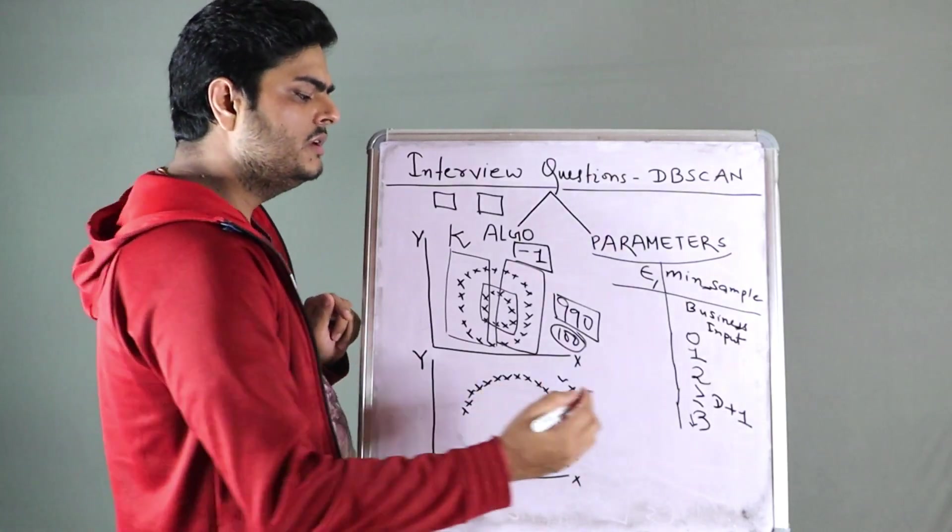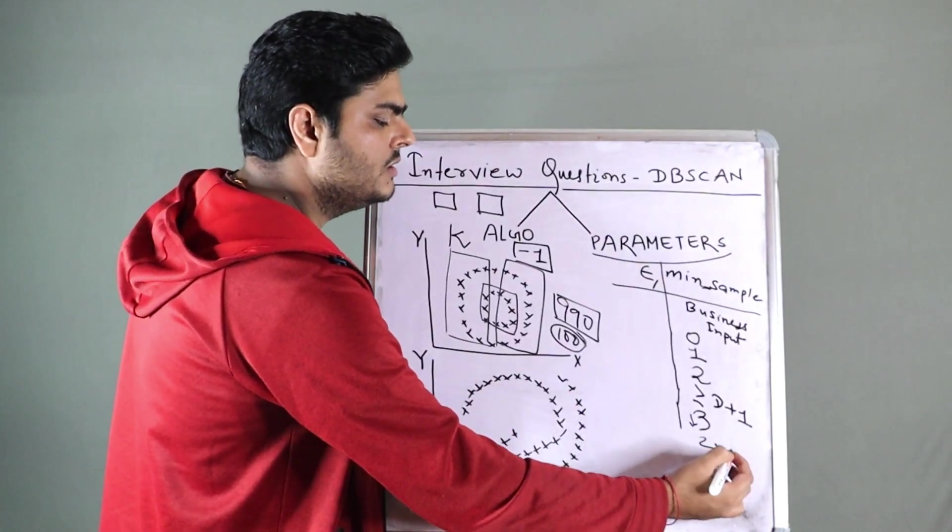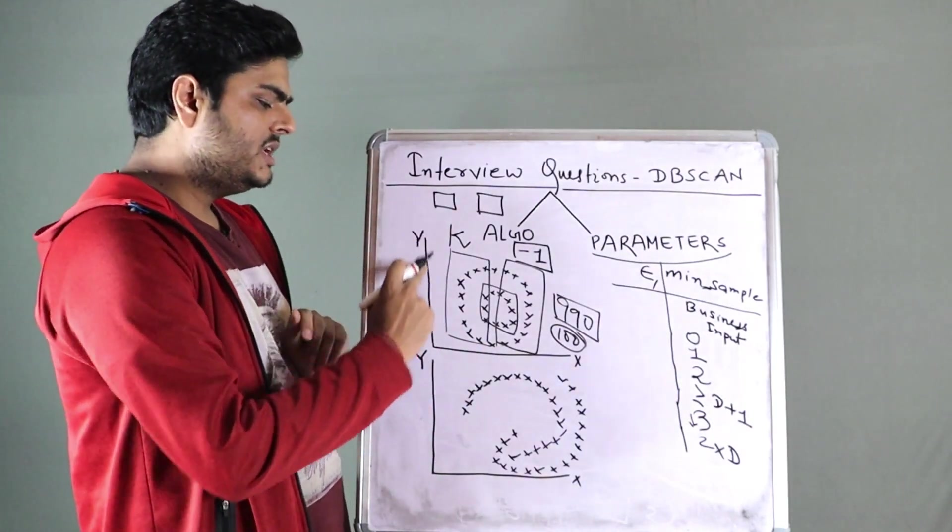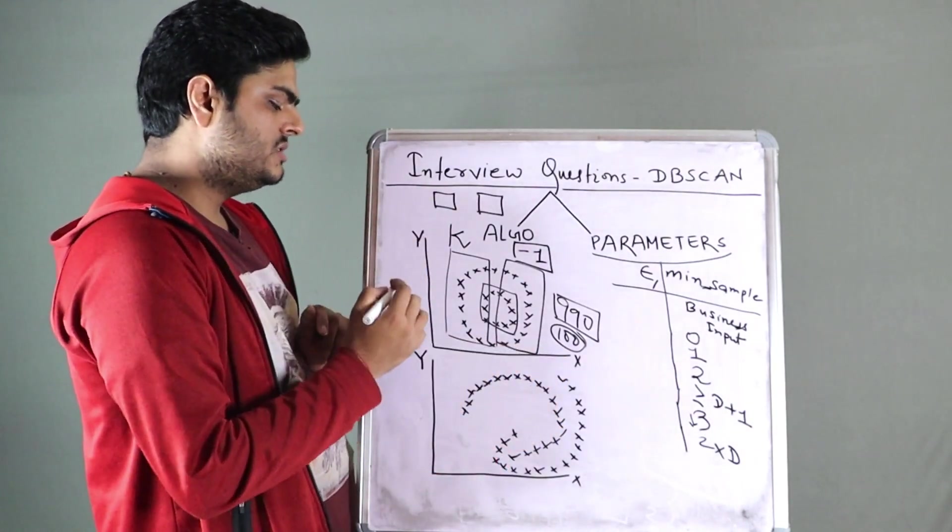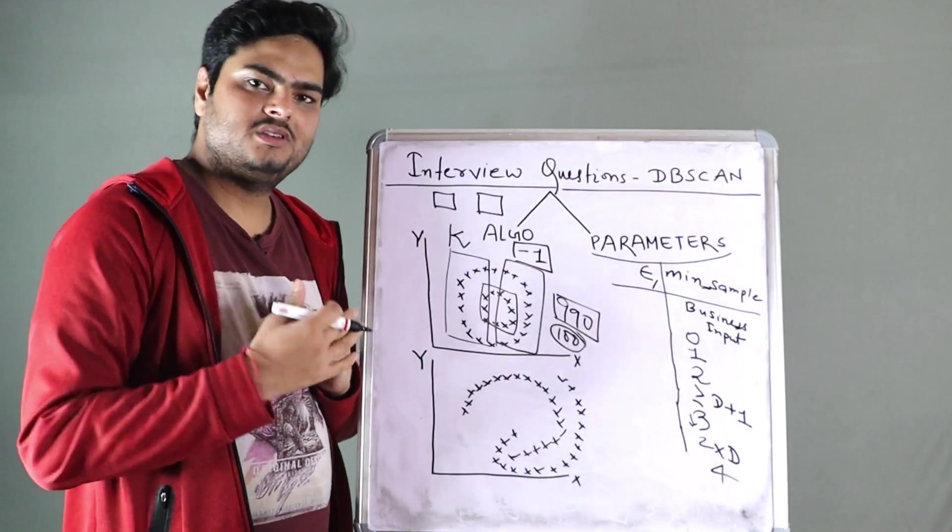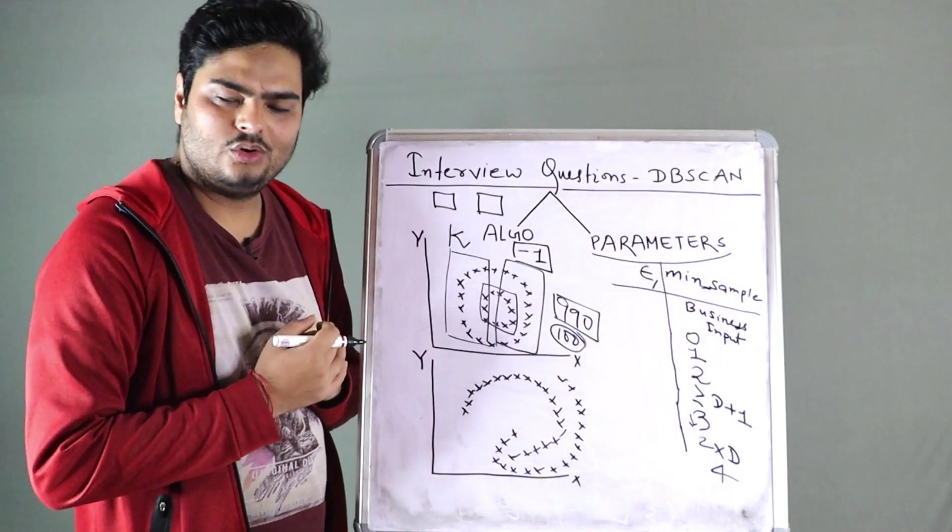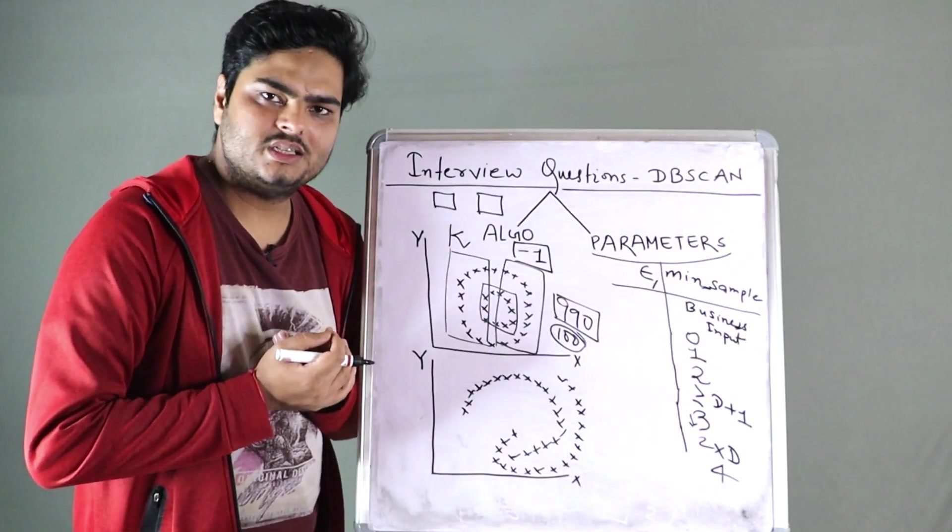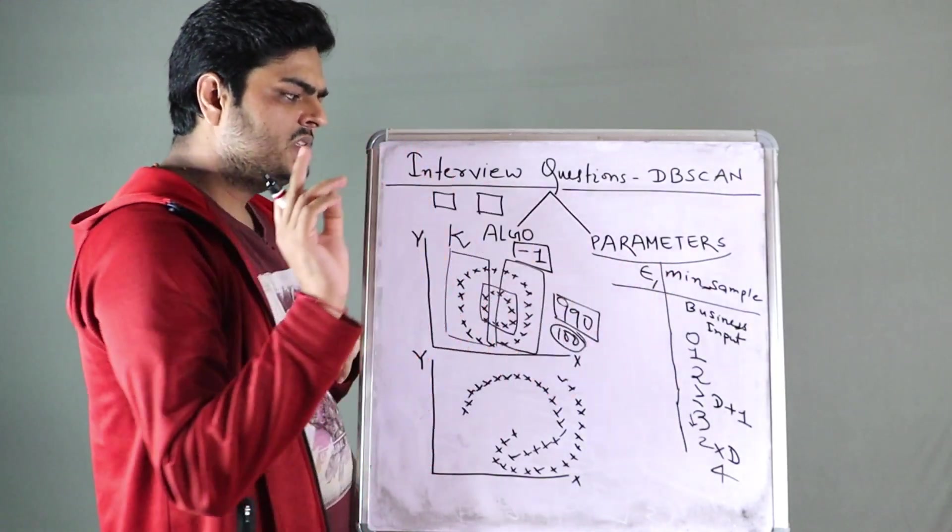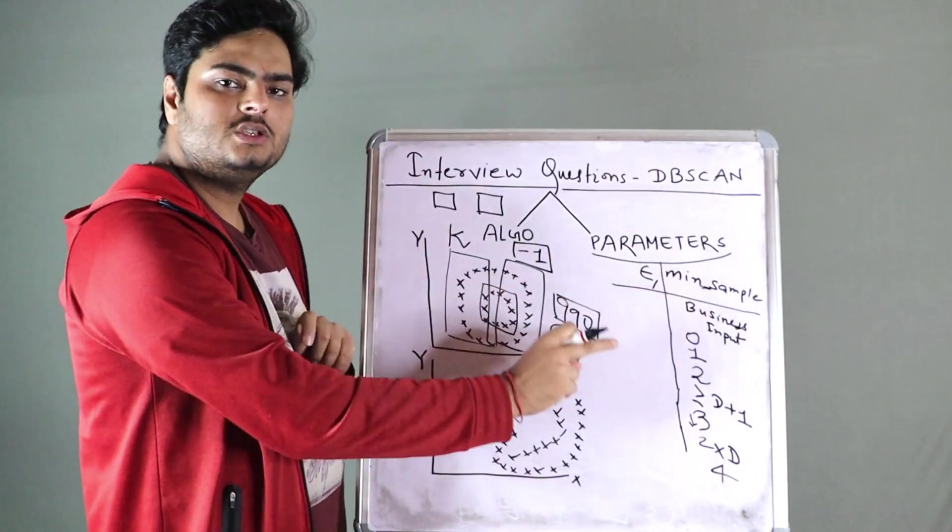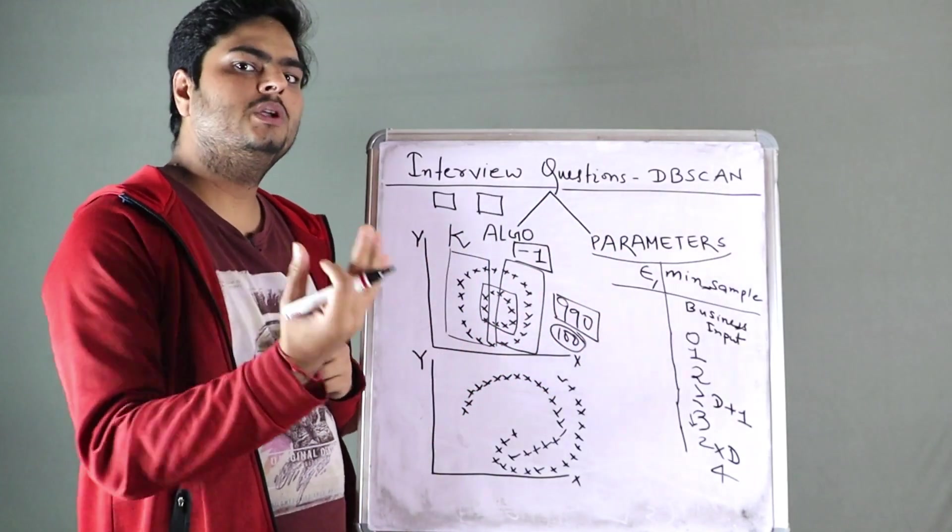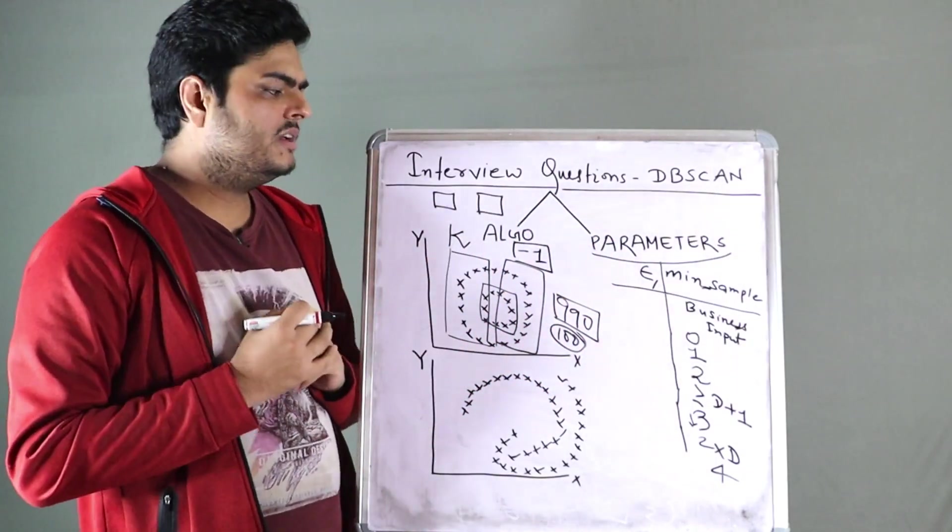And second thumb rule is two into D. So you can start with two into D. Two into D means D is your dimension. So here my data is in two dimensions. So my minimum number of points will be four. This is applicable to large dimensions data or even medium dimensions data also, which is our regular data in data science. So remember two into D, minimum number of samples, you have to tell to the interviewer, why not zero, why not two, why not one. All these things will create a very good impression.